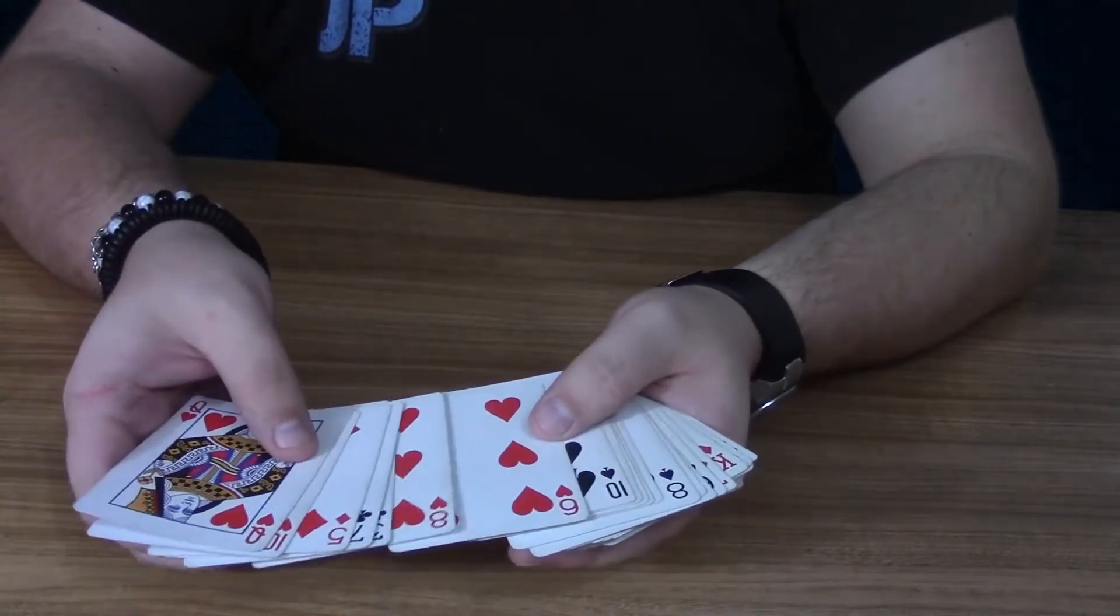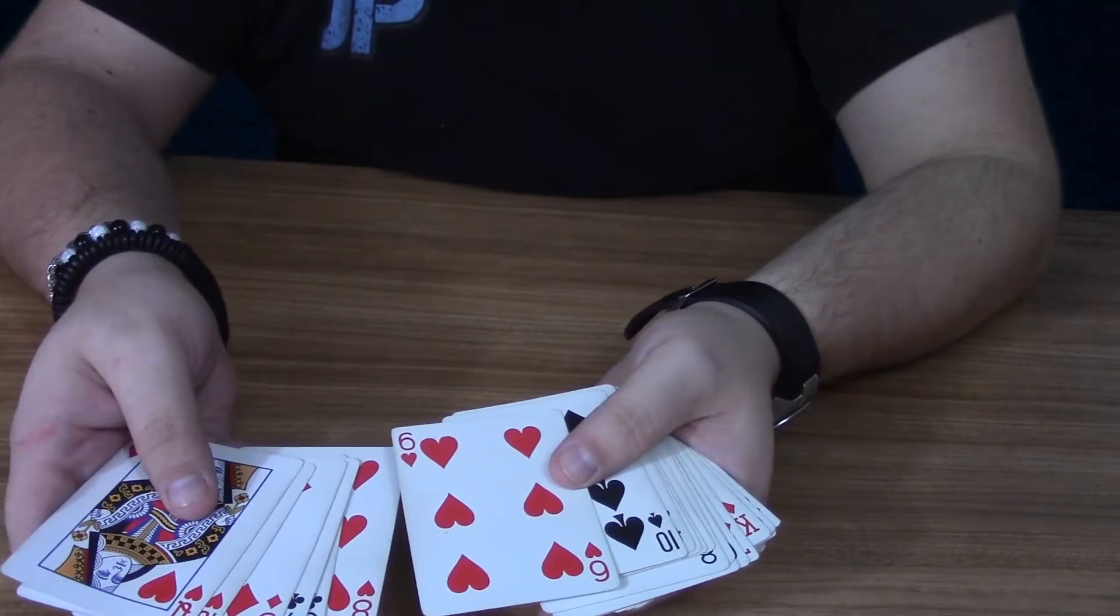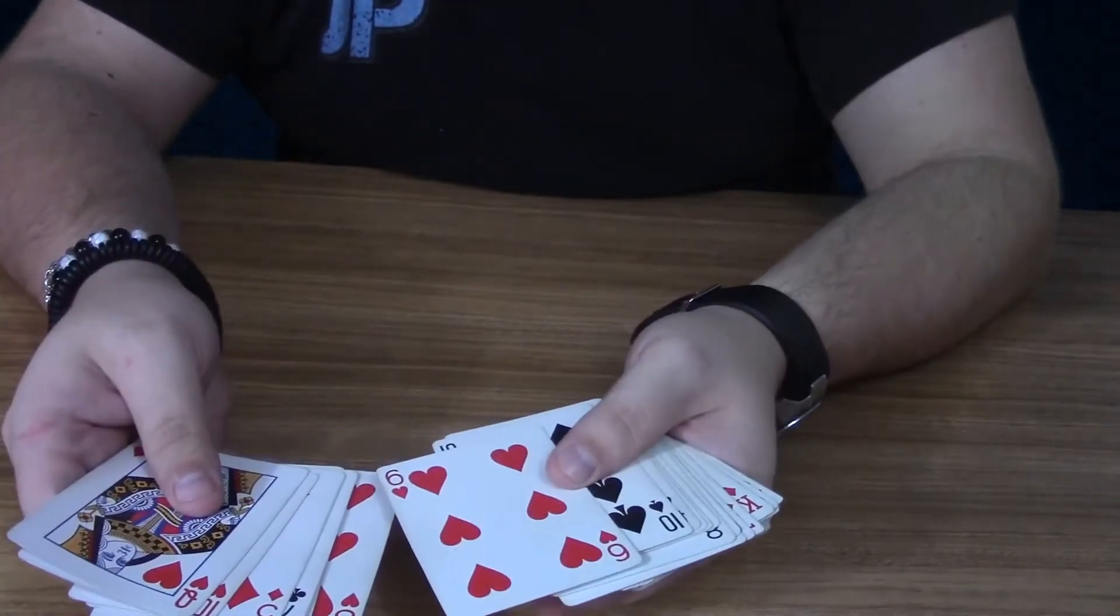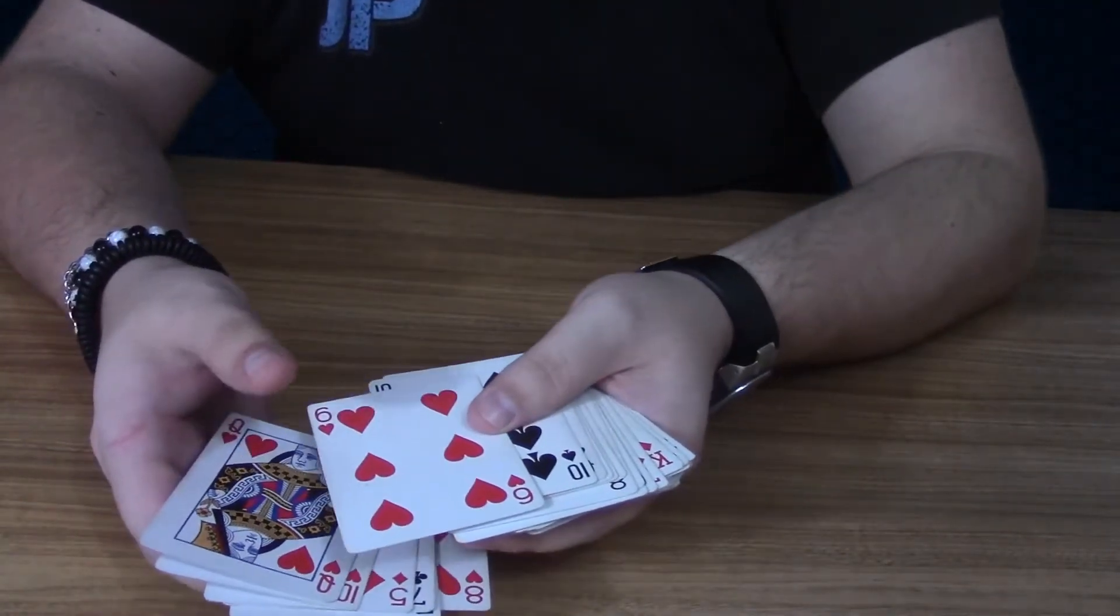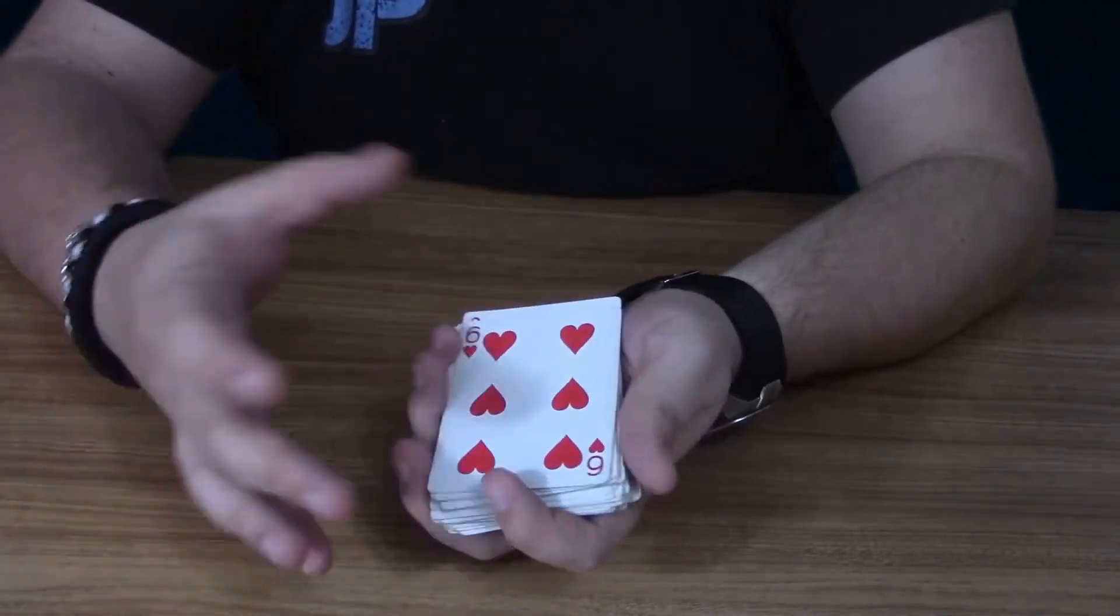Let's just say they chose a six of hearts now. Just have them call out one of the cards that they see. Don't flash anything. And then you're just going to bring it over, take it with your thumb, and slide it over here. Put it on top. It's really easy.